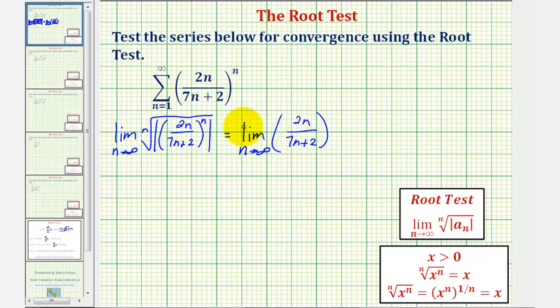Now to find our limit as n approaches infinity, since the degree of the numerator and denominator are the same (both degree one), this limit equals the ratio of leading coefficients, which is 2/7. Since 2/7 is less than one, by the root test, this series converges.